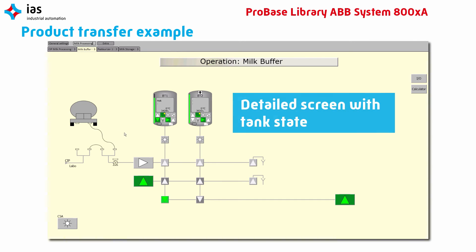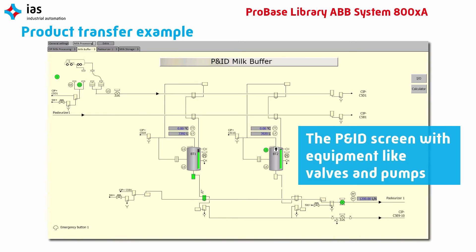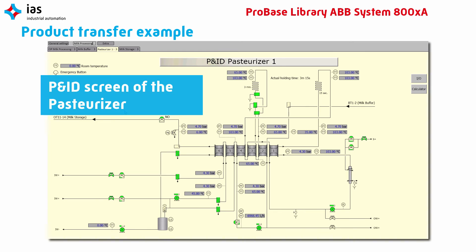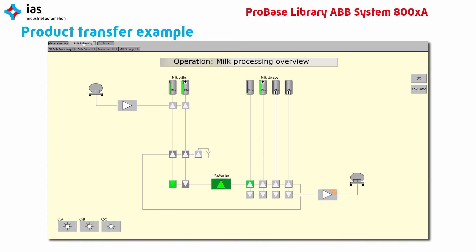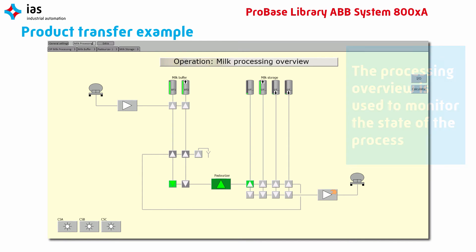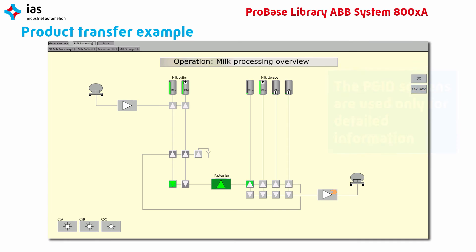The detail screen of the milk buffer shows the required information, like the tank state and active route. The P&ID screen of the milk buffer shows all the equipment, like the activated valves and pumps. And this is the same for the P&ID screen of the pasteurizer. Normally, the operator only uses the processing overview to monitor the actual state of the process. The P&ID screens can be used for detailed information, for instance when there is a problem with the equipment.